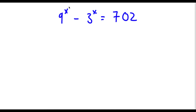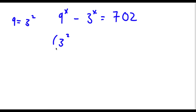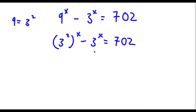Alright, so I have 9 to the power of x minus 3 to the power of x is equal to 702. Now 9 is the same thing as 3 squared. So if I replace 9 with 3 squared, I get 3 squared to the power of x minus 3 to the power of x is equal to 702.